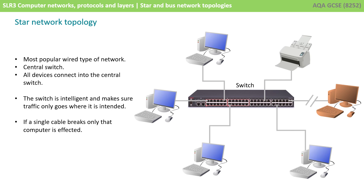In the past, this central switch would probably have been a hub. A hub differs from a switch because it broadcasts the traffic to all computers on the network, and therefore security is much lower and bandwidth is also much lower because of the increased traffic. A switch solves those problems by making sure the traffic is only directed to the computer that it was actually intended for.